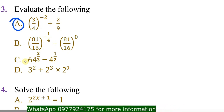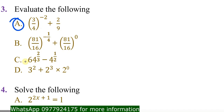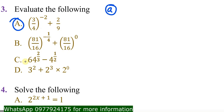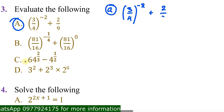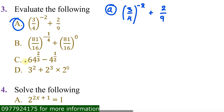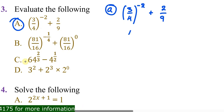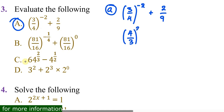How do you answer such a question? For part (a), rewrite it as: (3/4) to the power negative 2, plus 2/9. You notice you have a fraction 3/4 raised to a negative power. To undo this, swap the fraction — 4 comes up and 3 comes down — then the negative power becomes positive 2. So you now have (4/3)² + 2/9.